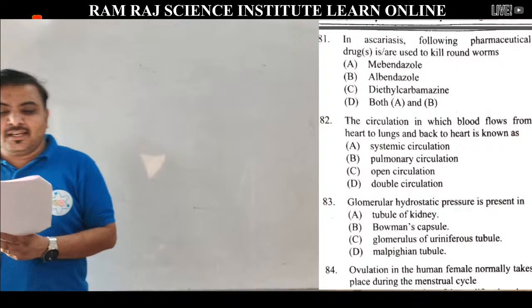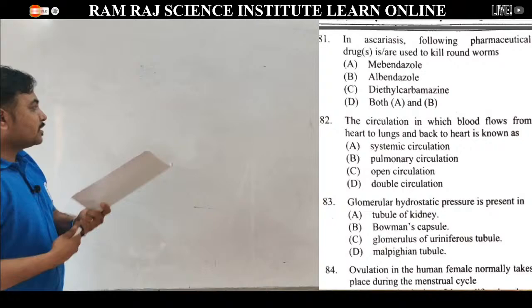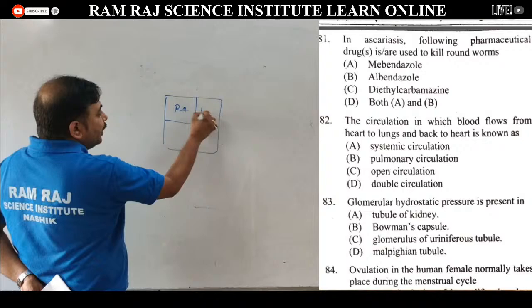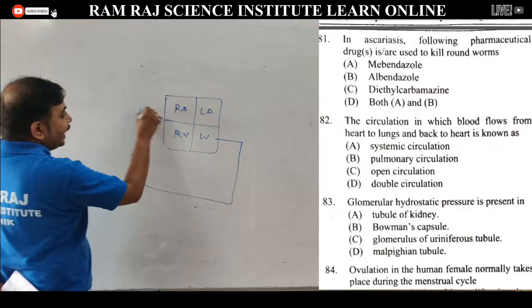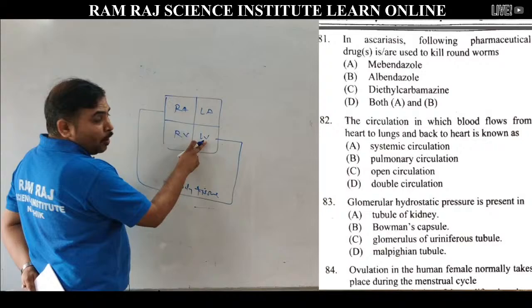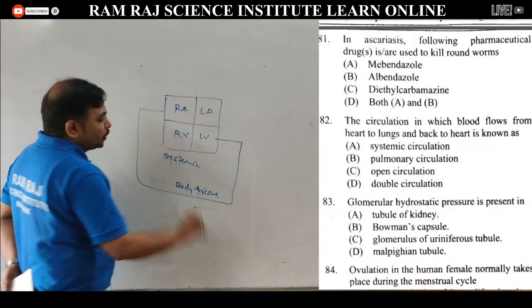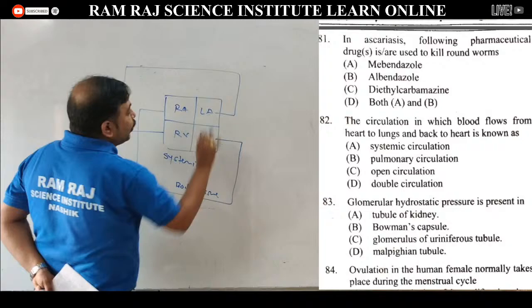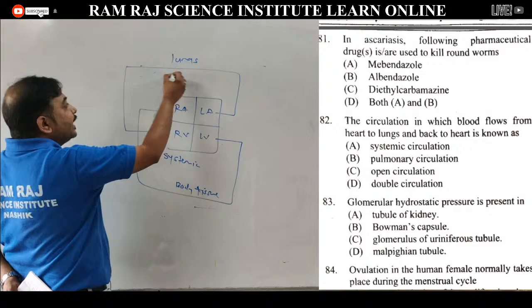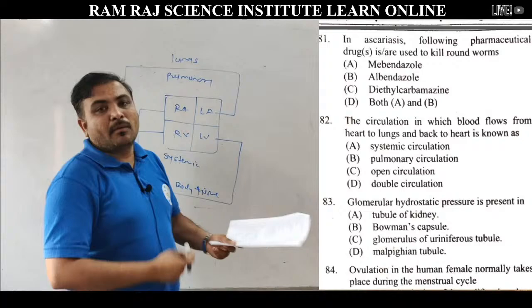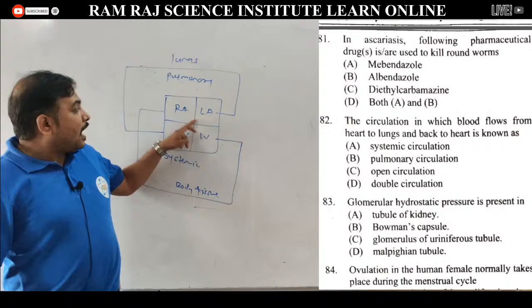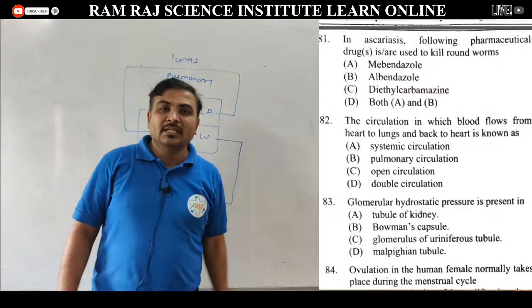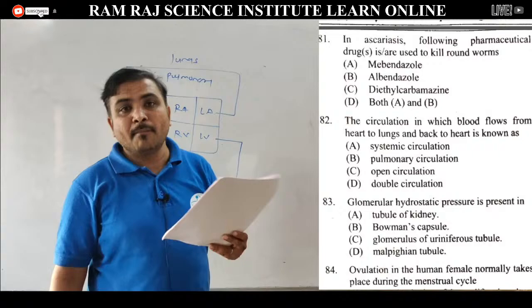Question 82: the circulation in which blood flows from heart to lungs and back to heart. Double circulation में: circulation from left ventricle to right auricle via body tissues is called systemic circulation. Circulation from right ventricle to left auricle via lungs is called pulmonary circulation. तो heart to lungs के बीच में जो है वो pulmonary circulation है. Answer is pulmonary circulation.